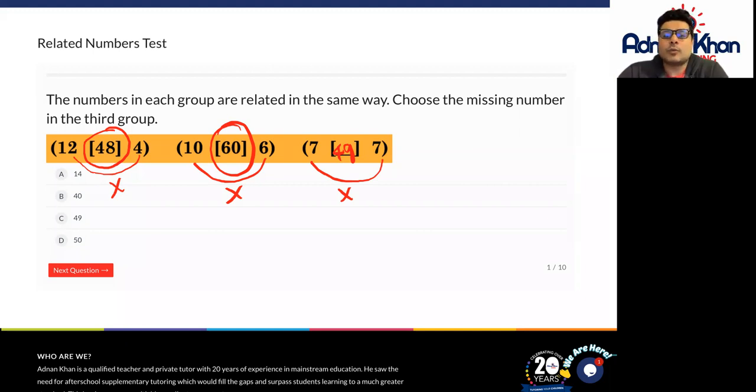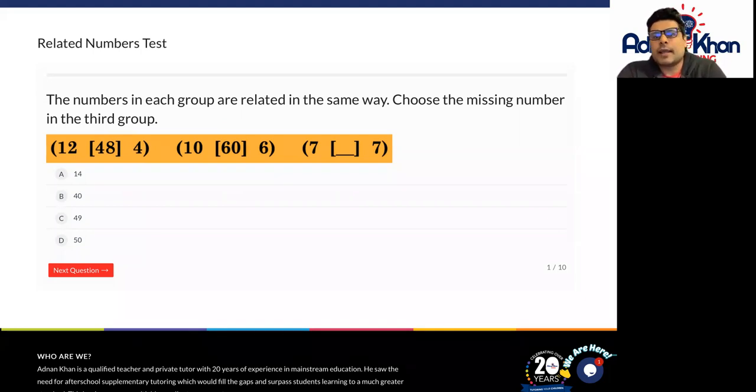But you could do it another way if you like. You could multiply the two outer numbers to find the middle answer. That's how this particular question is probably best to work out in this case.